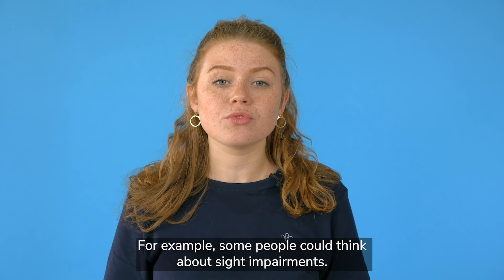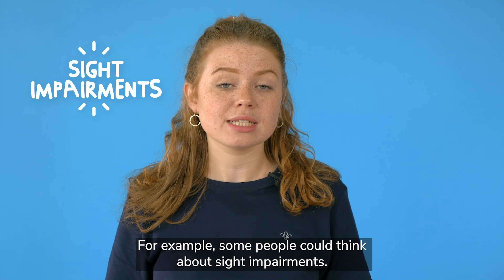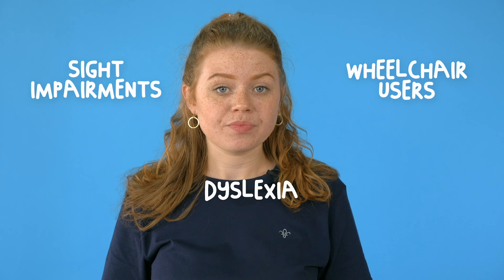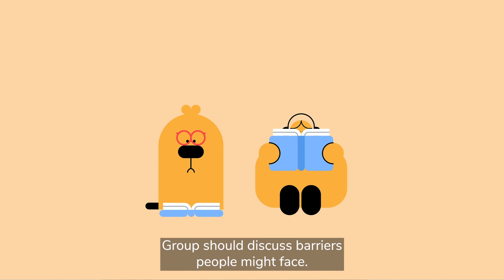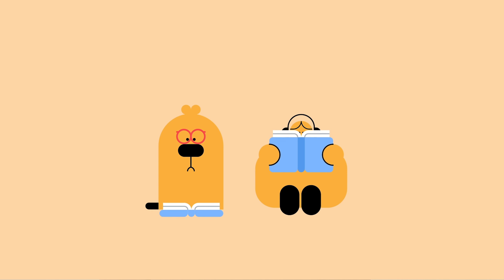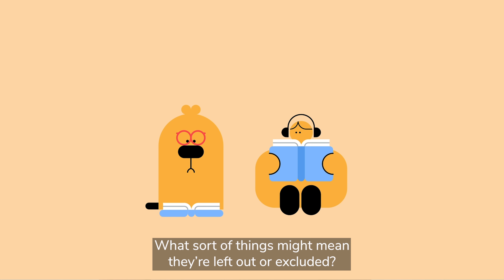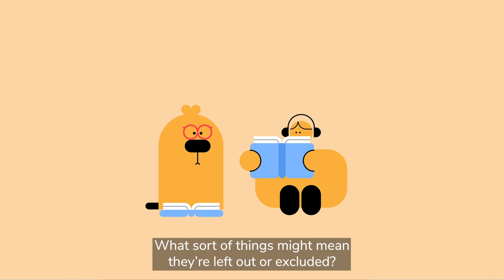The person leading the game should give each group a different impairment or condition to consider. For example, some people could think about sight impairments, others could think about people who use wheelchairs, or people with dyslexia.